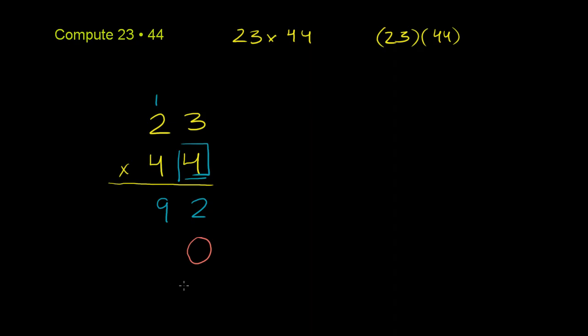We're going to find out that 4 times 23 is 92. We just figured that out. If we just multiplied this 4 times 23 again, we would get 92 again. But this 4 is actually a 40, so it should be 920. That's where we're putting that 0.